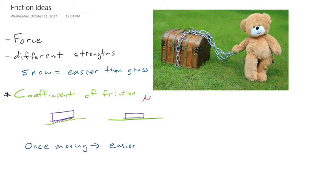And this leads us to our second concept, which says that when an object is at rest or not moving, it has generally a higher coefficient of friction than when it is moving. And this we call the difference between static and kinetic friction.